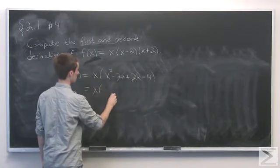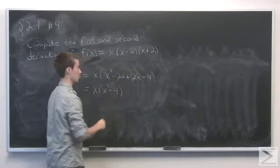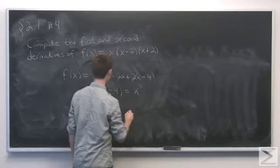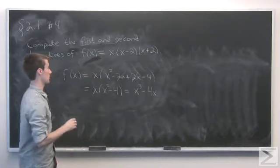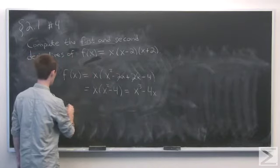This will leave us with x times (x² - 4), or x³ - 4x. Now this is something that we can apply linearity and the power rule to.